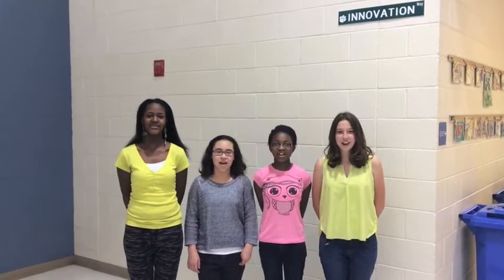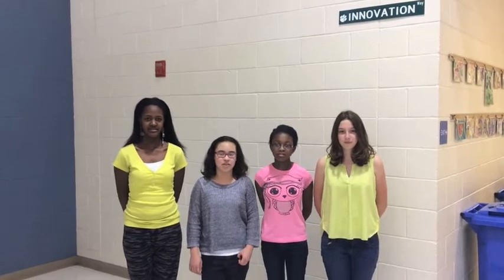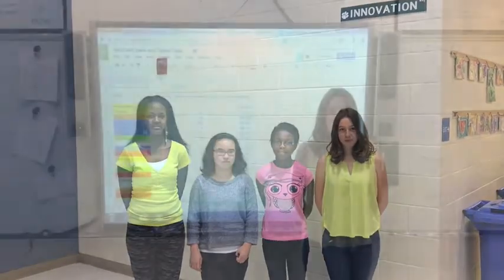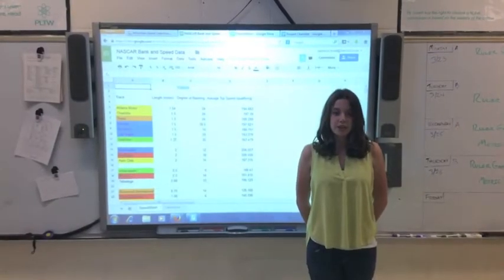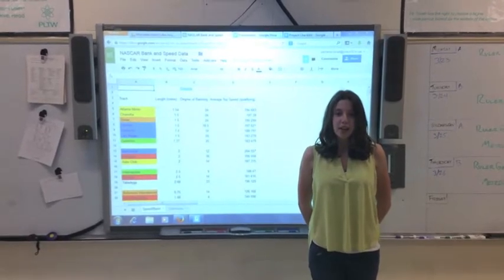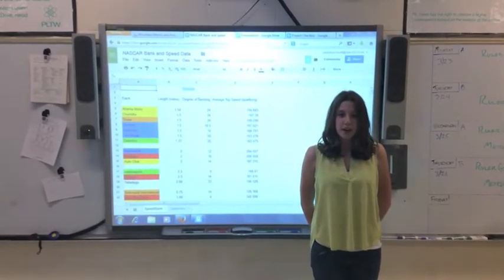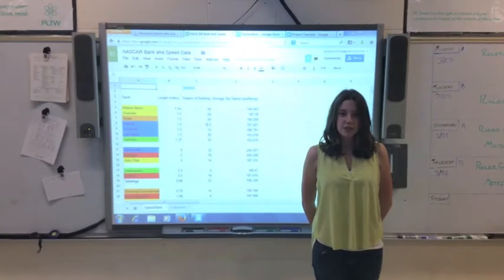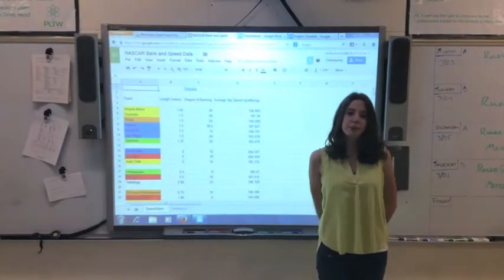We have to determine the mathematical relationship between the degree of banking and the average top speed. We went on NASCAR's website and we searched up the average top speed, the length, and also the degree of banking for each racetrack. Then we compiled it onto a spreadsheet.